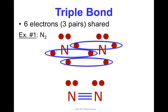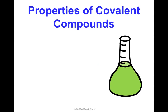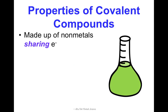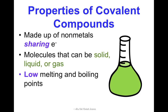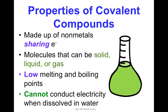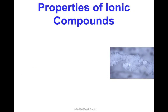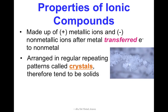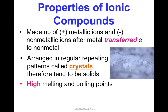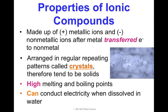We are going to practice this a lot in class. Covalent compounds formed from these kinds of bonds have some properties: they are all made of non-metals that share electrons in covalent bonds; they are molecules that can be solid, liquid, or gas; they have really low melting and boiling points; and they cannot conduct electricity when dissolved in water. This is different from ionic compounds, which are made of positive metallic ions and negative non-metallic ions after a metal transfers electrons to a non-metal. Ionic compounds form regular repeating patterns called crystals, are almost all solids, have super high melting and boiling points, and can conduct electricity when dissolved in water.